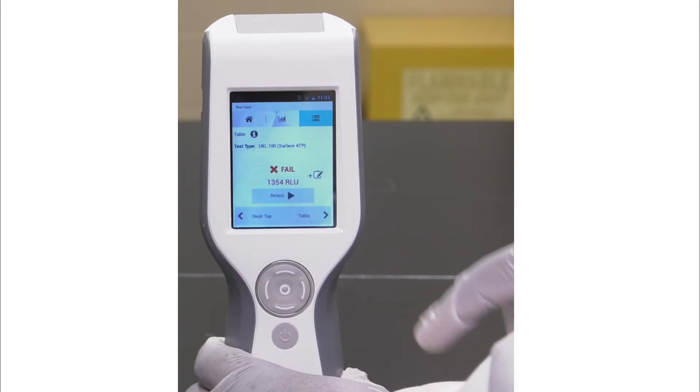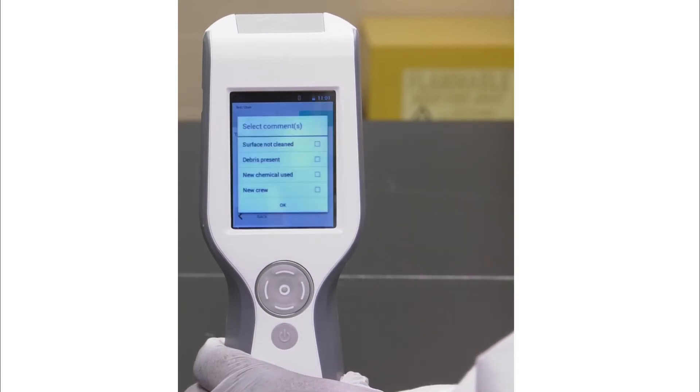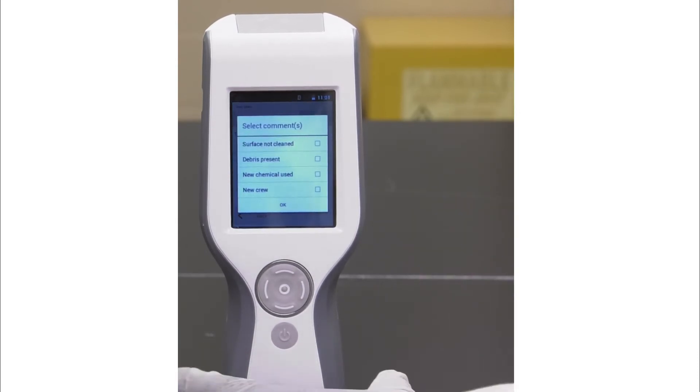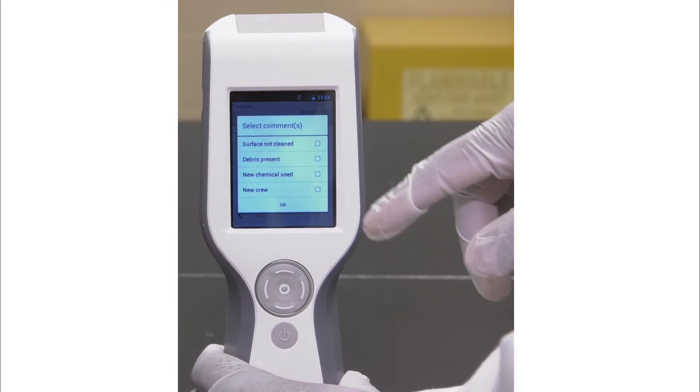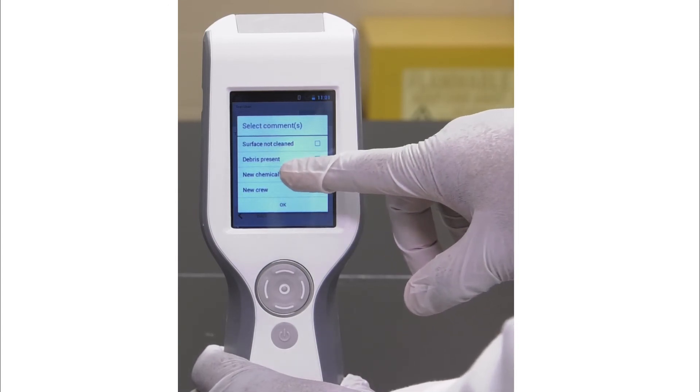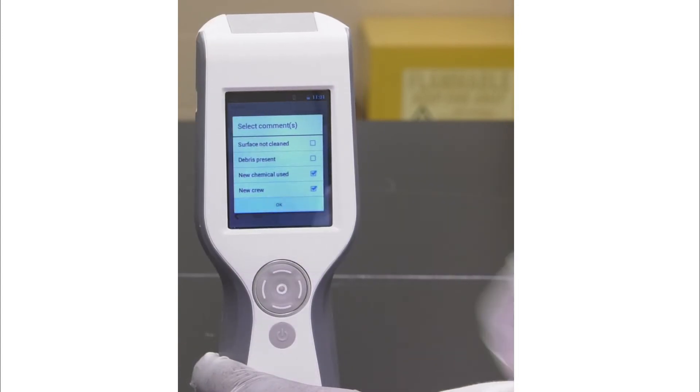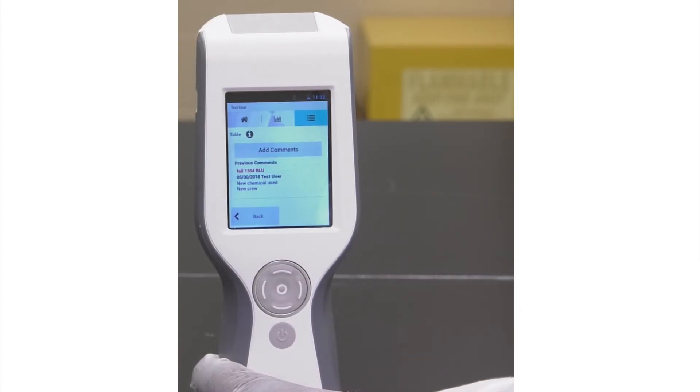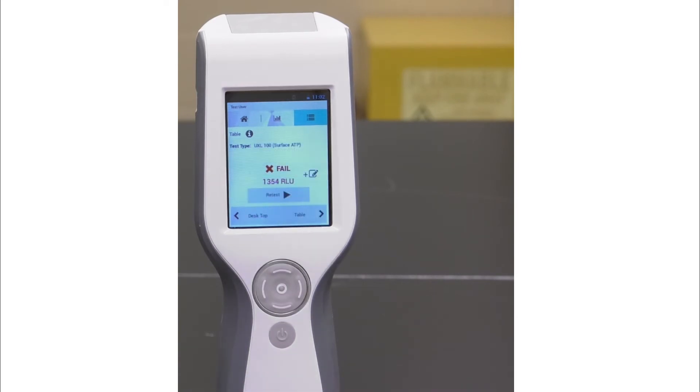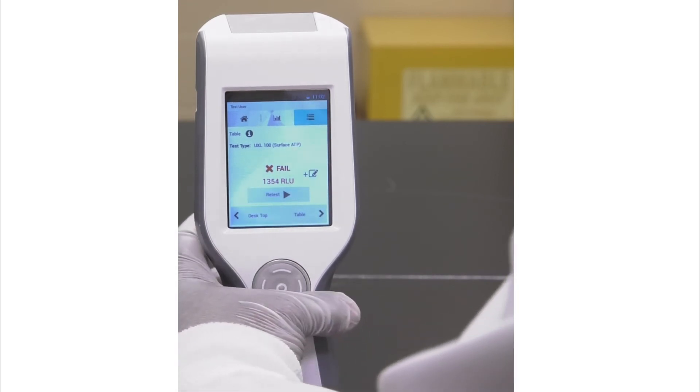Once the test is completed, you may press the Comment icon. Press Add Comments and you may select any comments that apply, such as New Chemistry Used and New Crew. Comments are preset from within the software. Selected comments will also appear on the results report in the 3M Clean Trace software. If you have a fail, follow your correct SOP to re-clean and re-rinse the surfaces. We recommend re-testing once a corrective action has been followed.